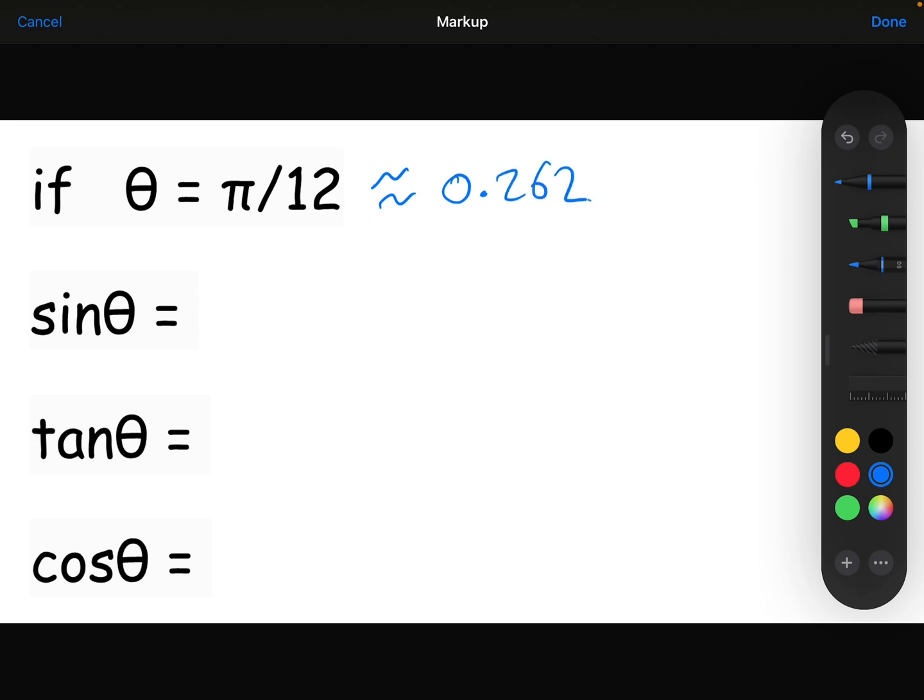Now if I were to type into my calculator sin π over 12, you would get roughly to three decimal places 0.259. As you can see, pretty close to 0.262.